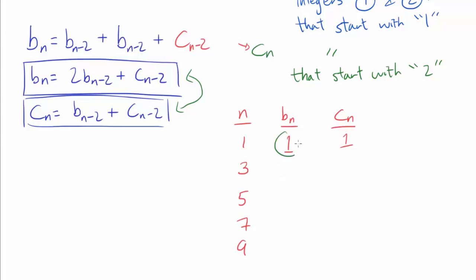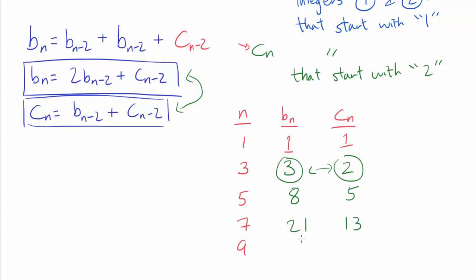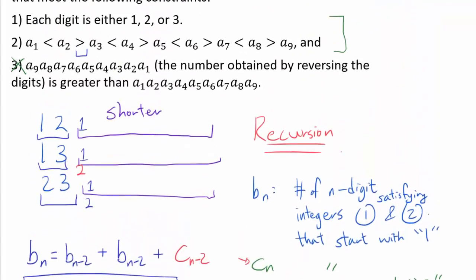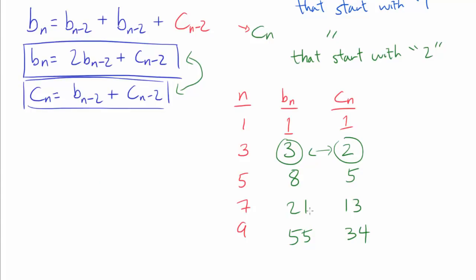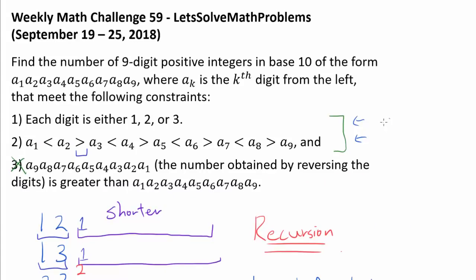For N equals 3: B sub 3 equals 2 times 1 plus 1 equals 3, and C sub 3 equals 1 plus 1 equals 2. For N equals 5: B sub 5 equals 2 times 3 plus 2 equals 8, and C sub 5 equals 3 plus 2 equals 5. For N equals 7: B sub 7 equals 2 times 8 plus 5 equals 21, and C sub 7 equals 8 plus 5 equals 13. For N equals 9: B sub 9 equals 2 times 21 plus 13 equals 55, and C sub 9 equals 21 plus 13 equals 34. So the number of 9-digit integers satisfying constraints 1 and 2 is 55 plus 34 equals 89.